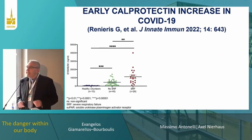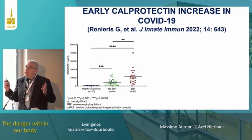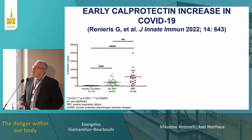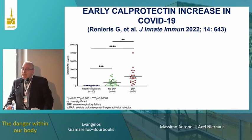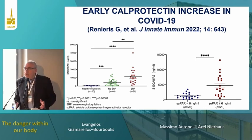Moving to COVID-19 and calprotectin: calprotectin is produced by neutrophils. We measured calprotectin early during hospital admission, at the time of admission with no dyspnea and no signs of severity. After knowing patient outcomes, we split them into healthy volunteers, those who did not develop severe respiratory failure after 14 days, and those who developed severe respiratory failure or died. From the very beginning, calprotectin was increased in patients who went on to deteriorate.